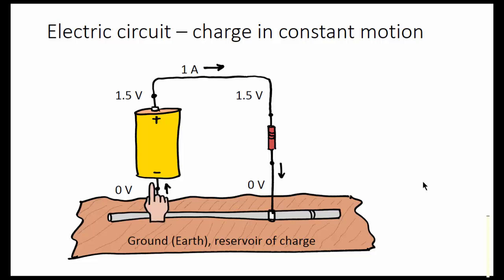The battery is doing work on the charge, that is, raising it up from zero to 1.5 volts. And we recover that energy by allowing the voltage to drop from 1.5 volts to zero volts. So we have energy coming in here to raise the voltage, and energy coming out as heat when the voltage drops to zero. We can do useful work by connecting a motor or a light bulb.